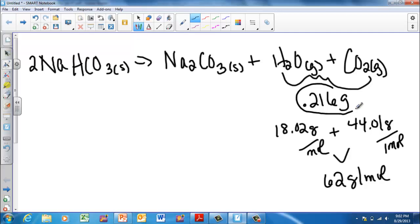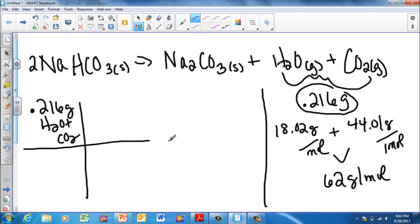The first step with this 0.216 is that I need to take the 0.216 grams of water and carbon dioxide, and we're going to convert it to moles by dividing it. Actually, that would be 62.03, wouldn't it?